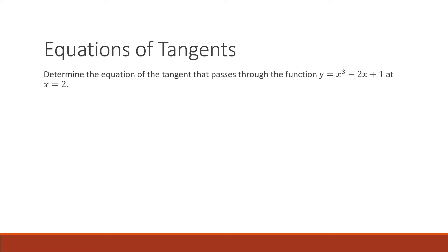Let's do an example and determine the equation of the tangent that passes through the function y = x³ − 2x + 1 at the point x = 2.